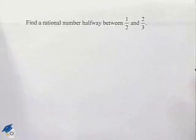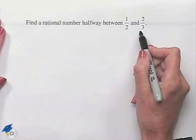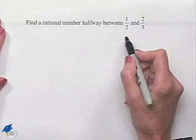Here's a problem dealing with rational numbers: find a rational number halfway between one-half and two-thirds. To find a number halfway between two given numbers, we can think of it as finding the average. Typically, to find an average you would add the two numbers together and divide by two.